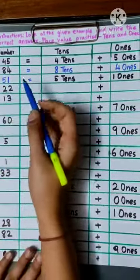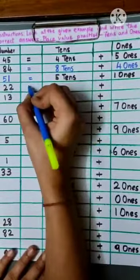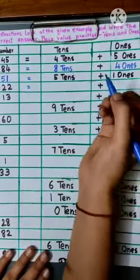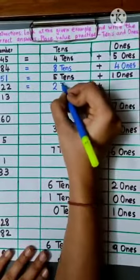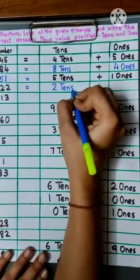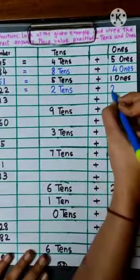Next number is number 22. That means 2 tens and 2 ones.